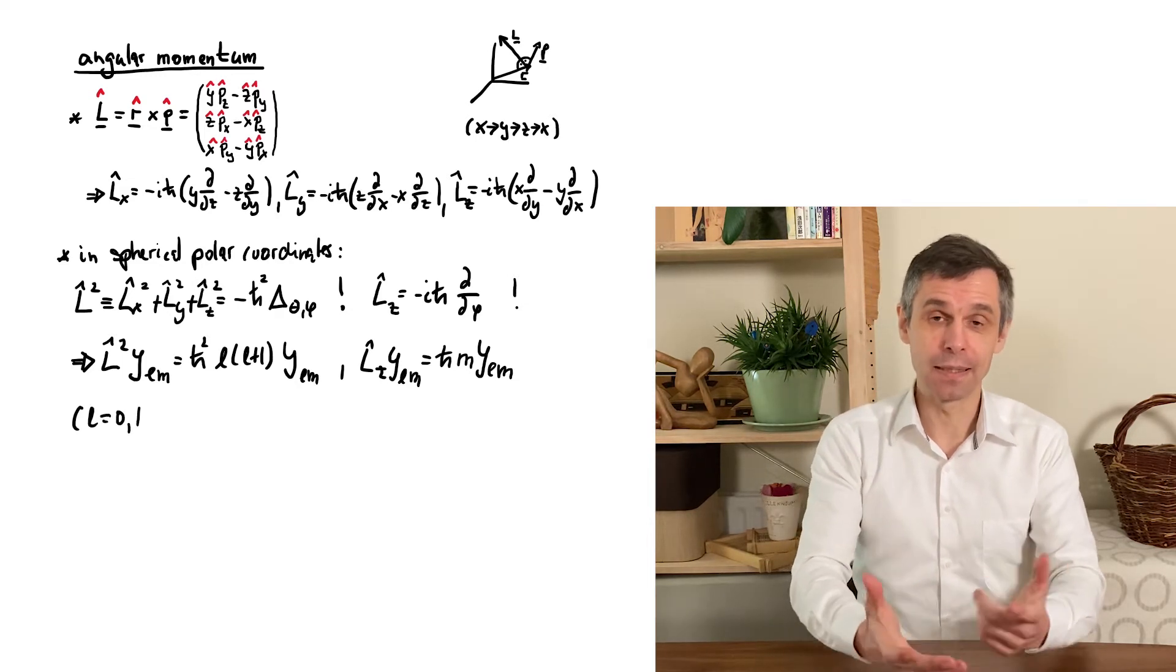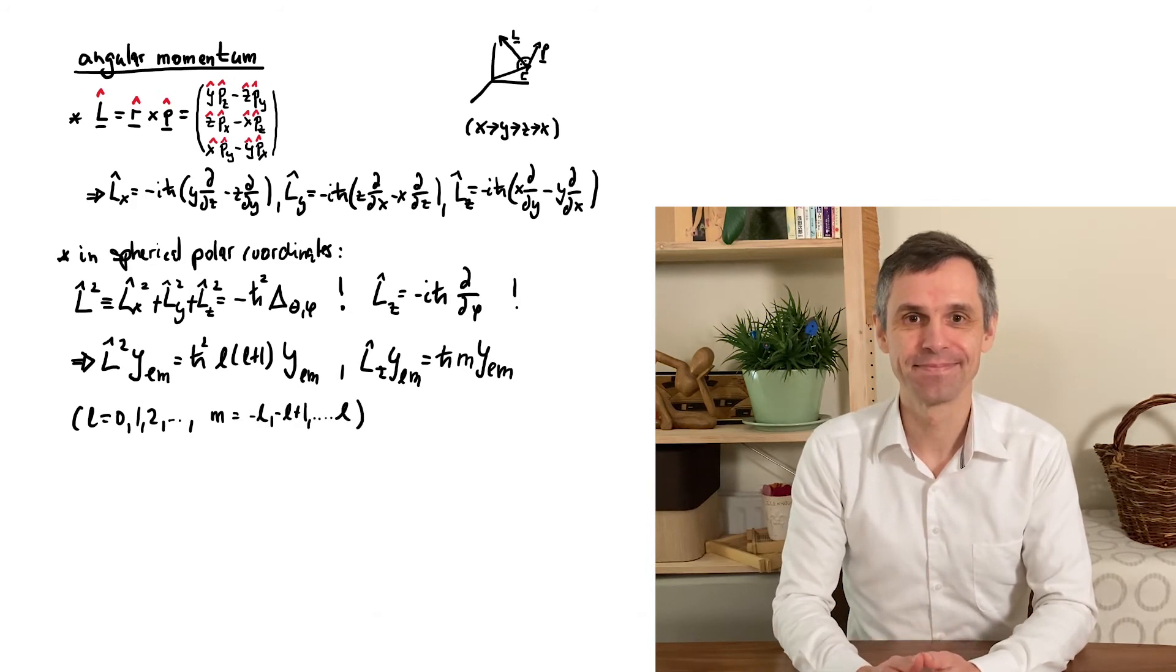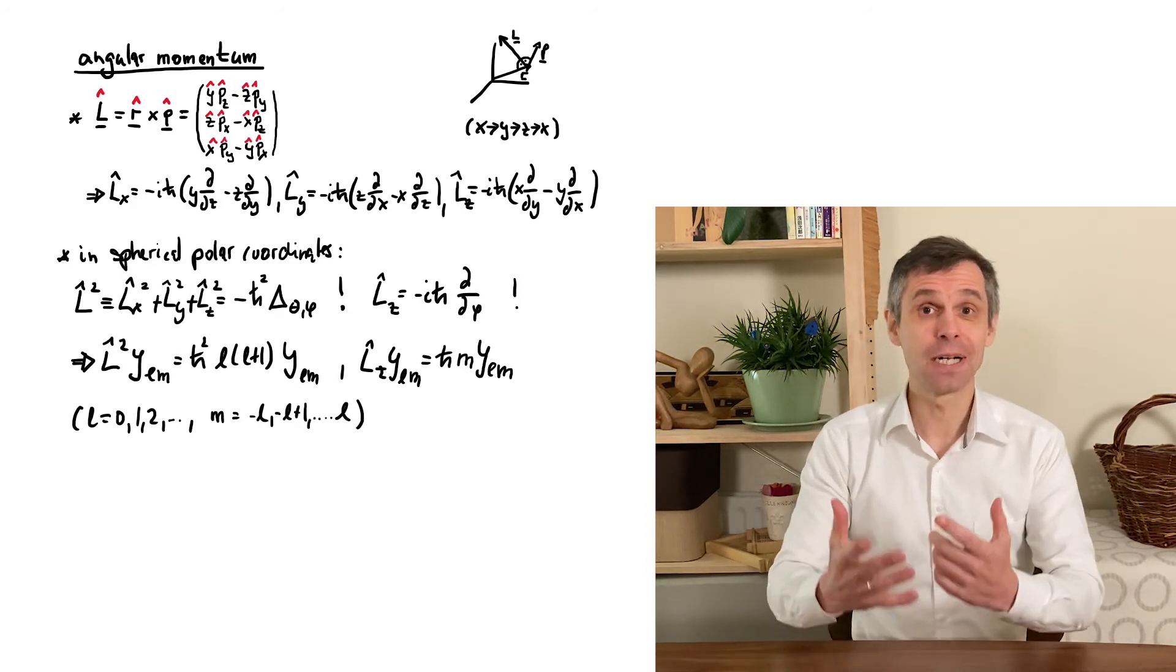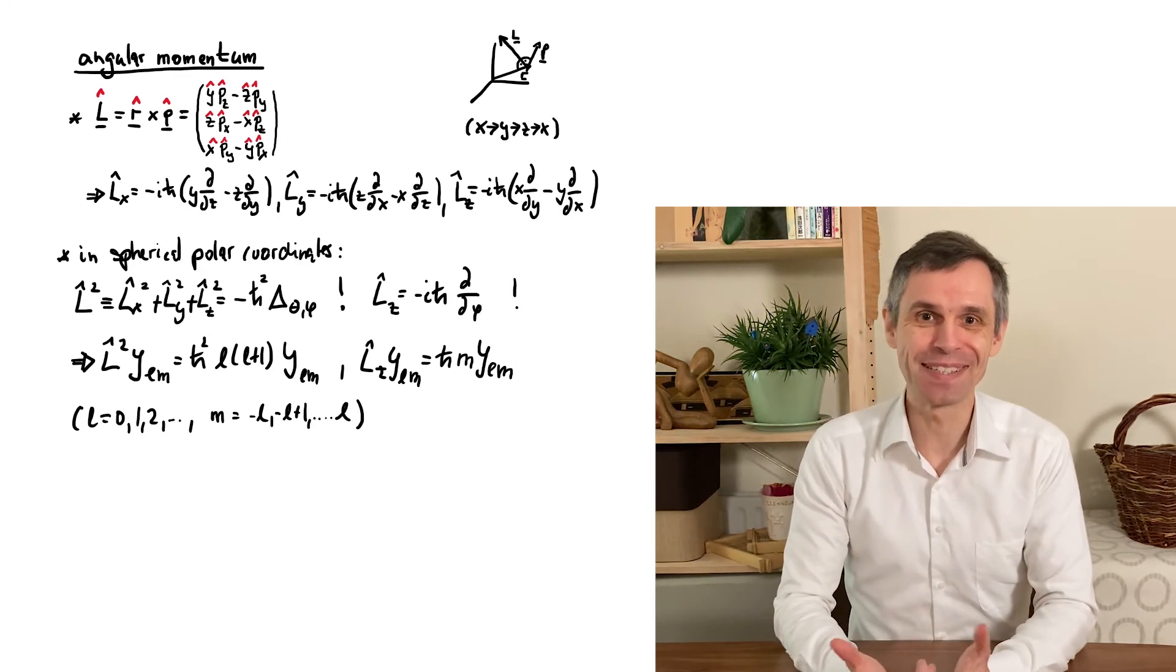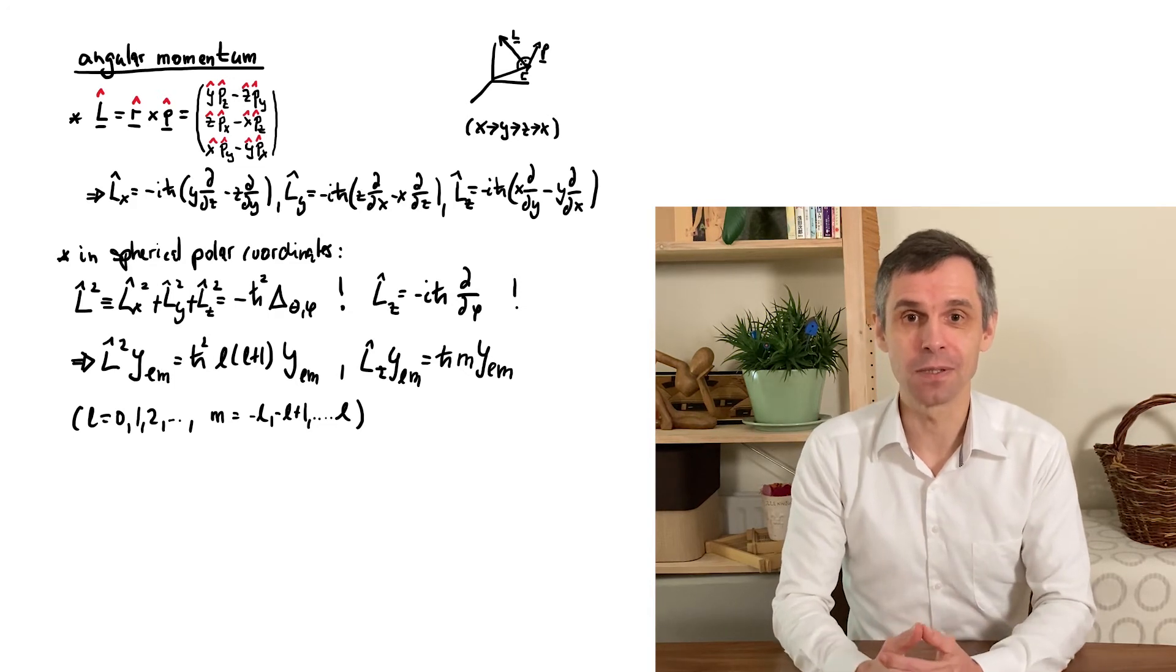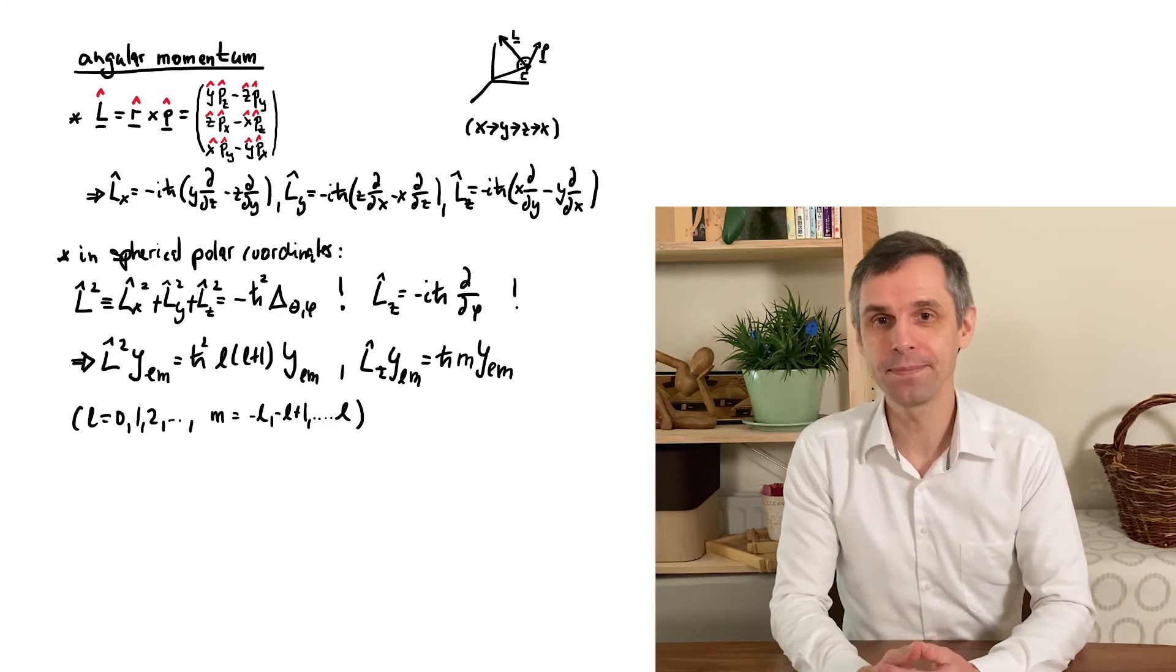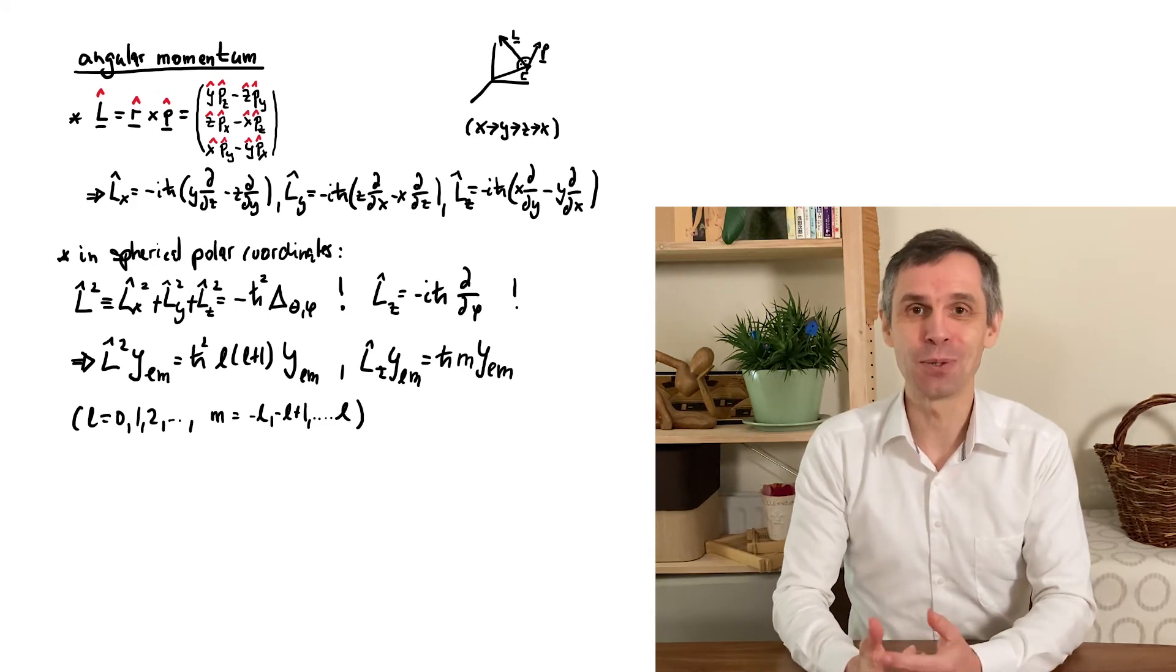And therefore, we conclude that the eigenvalues of both operators are quantized. So given our measurement postulate, observations of angular momentum return quantized values. The azimuthal quantum number L then relates to the observed value of total angular momentum, and the magnetic quantum number M to the value of the z-component.